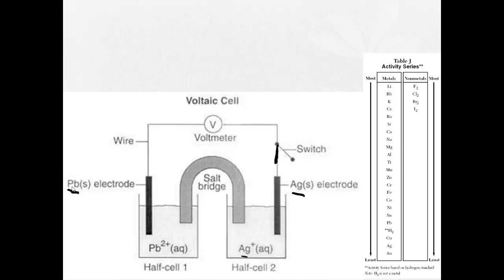So now we see here lead and silver. Here's lead and here is silver. So that means the flow of electrons will go from the higher element to the lower. So electrons are going to flow from lead to silver.